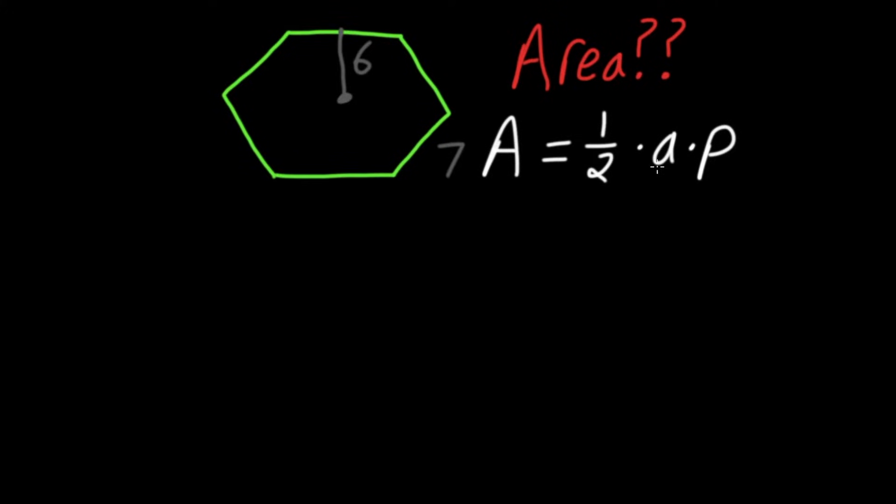a is the apothem. The apothem is the distance from the side of your hexagon to the center. In our case, six. So we have a equals six.